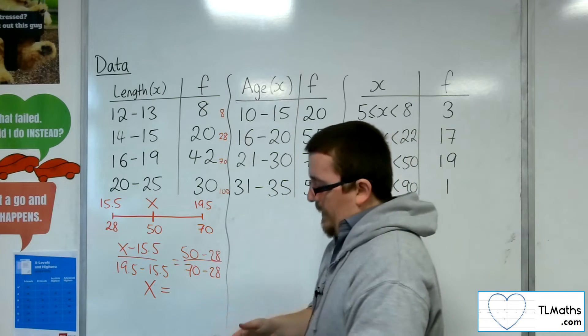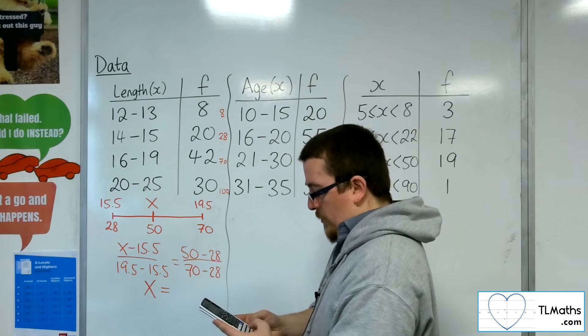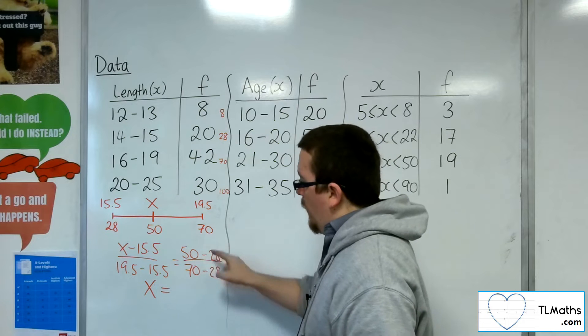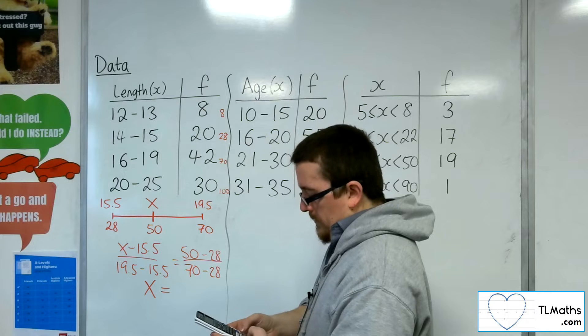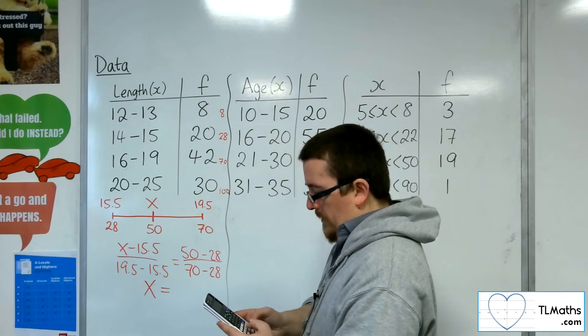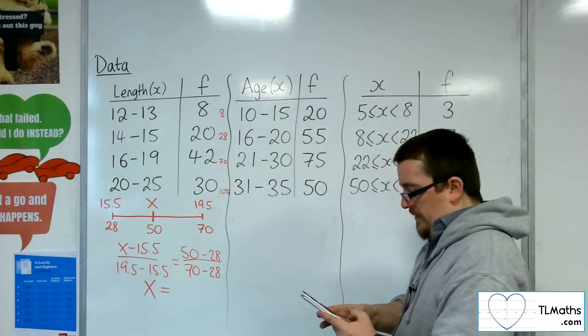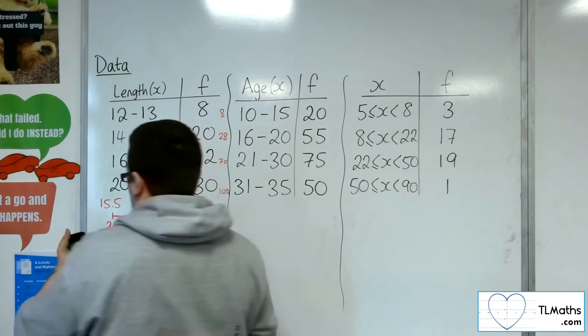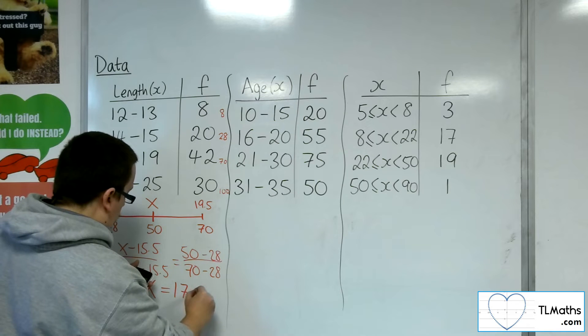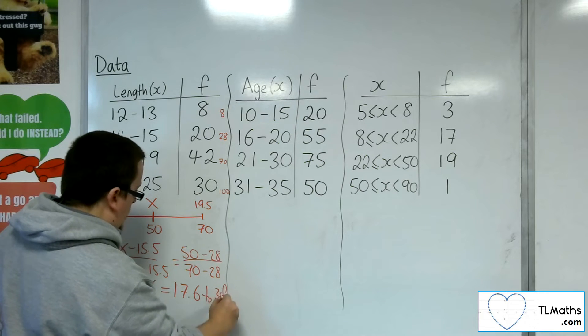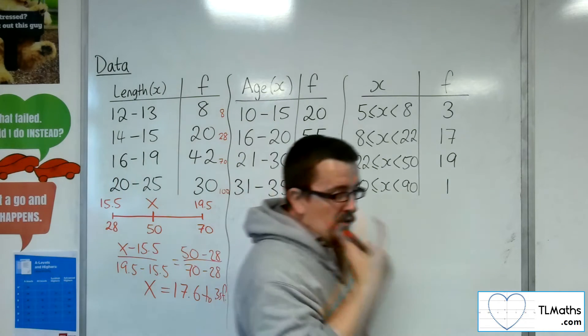So if I work out the right-hand side, so 50 take away 28, over 70 take away 28, that gets me 11 over 21. I'm going to times it by that denominator, so multiply up. So multiply it by 19.5, take away 15.5, so that gets me 44 over 21. Then add the 15.5 to both sides, and I get 739 over 42, which is 17.6 to 3 sig fig. 17.6 is my estimate for the median value.